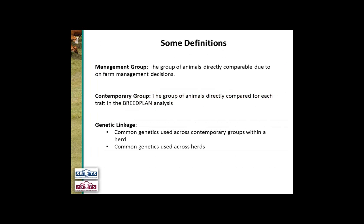First, some definitions. A management group is a group of animals directly comparable due to on-farm management decisions — which animals you run together in comparable mobs. A contemporary group is the group of animals directly compared for each trait in the Breedplan analysis. They're not the same thing, because Breedplan does further break up a management group into contemporary groups. Genetic linkage refers to common genetics used across contemporary groups within a herd, or across herds, allowing direct comparison.